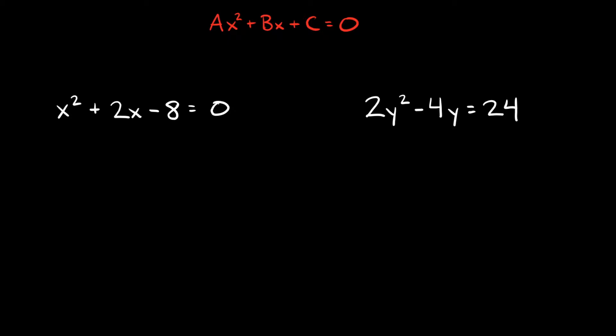Let's start with this one right here: x² + 2x - 8 = 0. The first thing you can see is that we already have it in the form we're looking for — it's equal to zero at the end. So that means I can start factoring it.